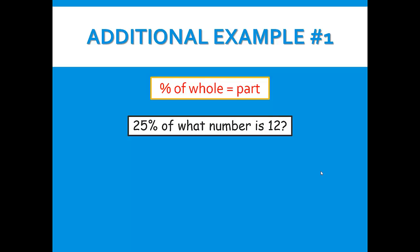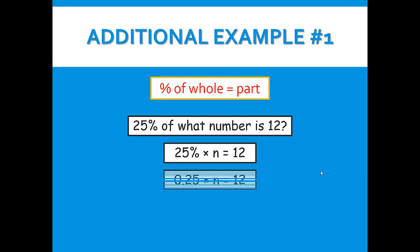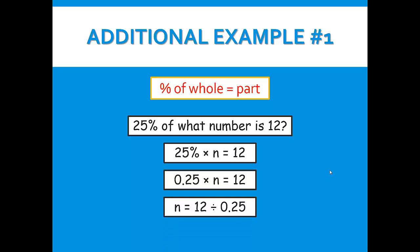For our first additional example we have 25% of what number is 12. So that would be 25% times n equals 12. 25% as a decimal is 25 hundredths, or 0.25. So we will now divide each side by 0.25, giving us n equals 12 divided by 0.25. Now we're going to divide that out.